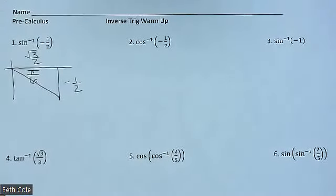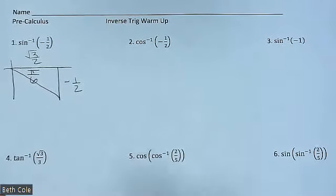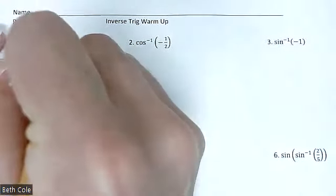Now, if you're in quadrant one, that's just your answer. If you're not in quadrant one, that's not your answer — it's how you got there. You have to rotate backwards to get there. So it's negative pi over six.